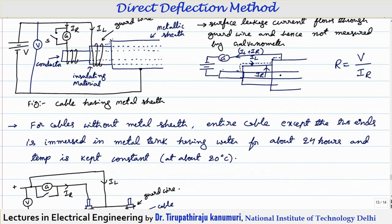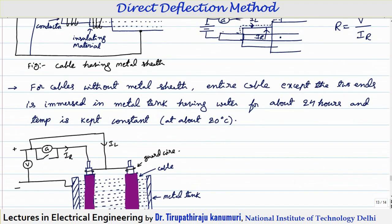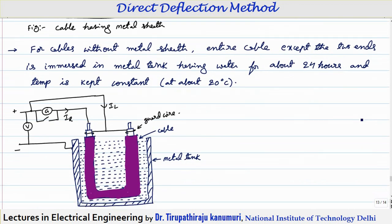If the cable does not have a metal sheath, we need to provide a negative terminal, which requires some metallic contact. For cables without a metallic sheath, the entire cable is dipped in saline water, which acts as a conductor. The cable is dipped in saline water and kept for 24 hours at a constant temperature of about 20 degrees. The saline water is in a metallic tank, which also acts as a conductor. The metallic tank acts as the negative terminal and is in contact with the saline water.